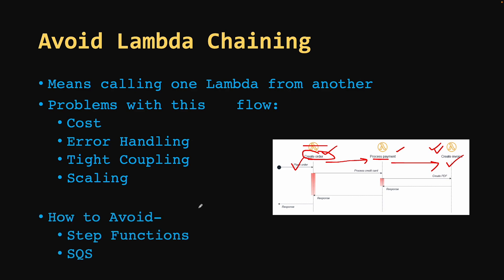The solution is to decouple the systems using SQS or any other event-based system. For example, instead of create invoice being called directly, you can add an SQS queue: process payment puts messages into SQS, and an invoice Lambda pulls from the queue to process. Another approach is to use Step Functions, which is an excellent orchestration framework with built-in retry and error handling mechanisms that makes it easy to coordinate multiple AWS services.